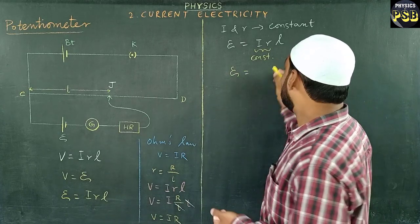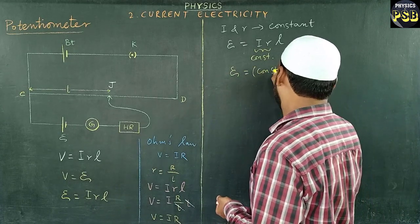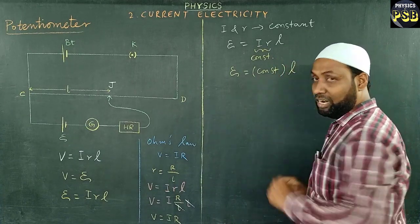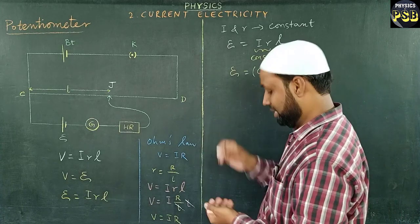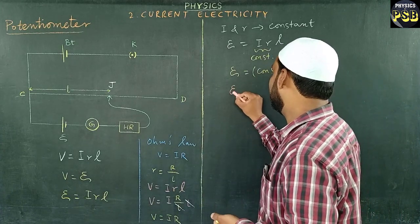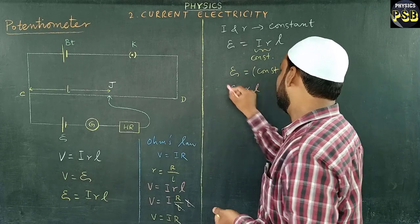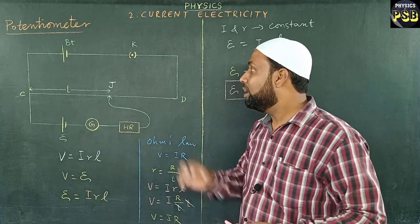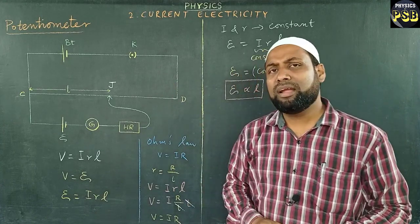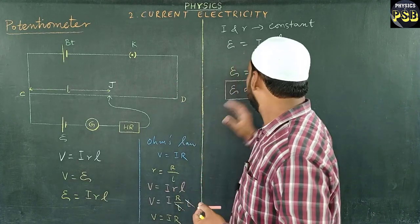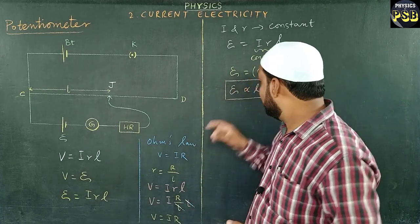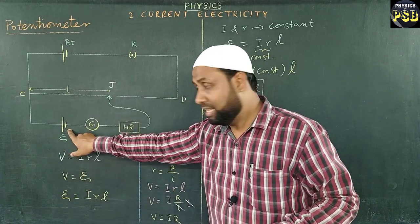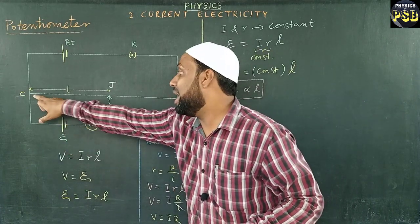So the equation takes the form: xi equals constant times L. Since I and r are constants, we get a proportionality: xi is directly proportional to L. This expression gives the principle of the potentiometer — the EMF of a given cell is directly proportional to the balancing length.